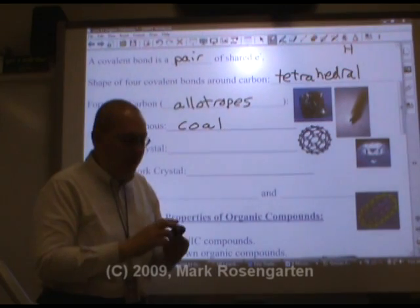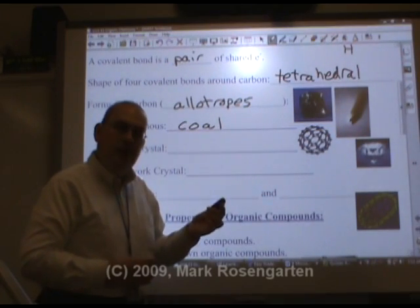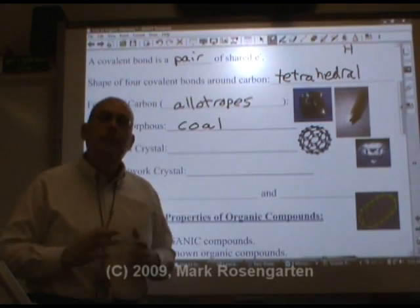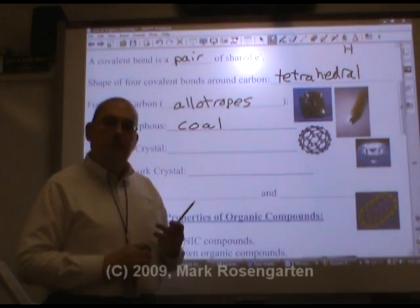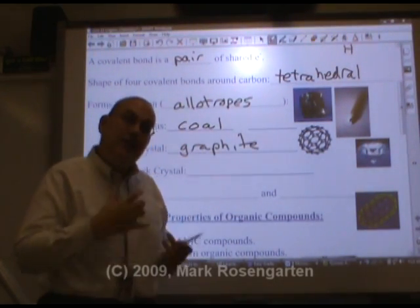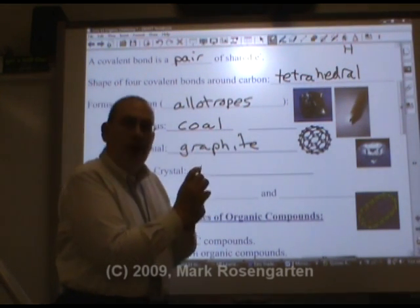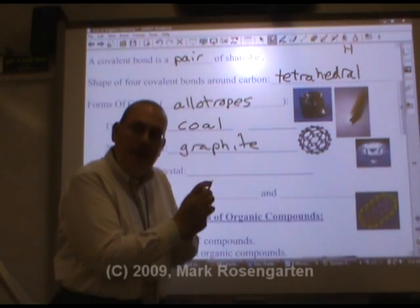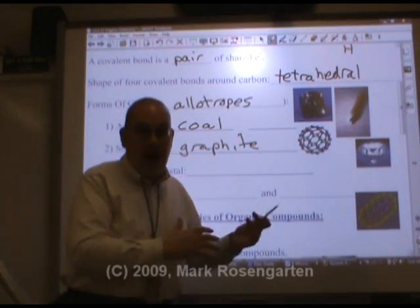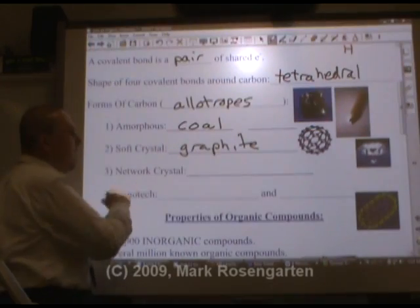Coal is packed full of energy, which is why we use it as a fuel. Of course, it's kind of a dirty fuel — digging it out of the ground can really damage the environment, but it's a relatively inexpensive source of energy, and most of the electricity generated comes from burning coal. When carbon is in a soft crystalline form, it forms what's called graphite. Graphite, when mixed with clay in certain proportions, gives you what we call pencil lead — it's not actually lead, it's just carbon, graphite, mixed with clay. The softer the pencil, the less clay and more graphite; the harder the pencil, the more clay and less graphite.